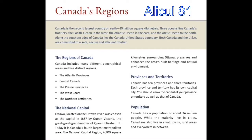The regions of Canada. Canada includes many different geographical areas and five distinct regions, which are the Atlantic Provinces, Central Canada, the Prairie Provinces, the West Coast, and the Northern Territories.